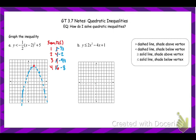Now with the shading — very similar to the way that we shaded with our lines. With inequalities, you shade above if it was greater, and below if it was less than. A quick way to remember: the word 'below' kind of looks like the less-than symbol. But with a parabola, we need to consider where the vertex is. If below the vertex is inside the parabola, we shade inside. If below the vertex is outside the parabola, we shade outside — not just the area that's below it.